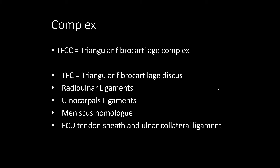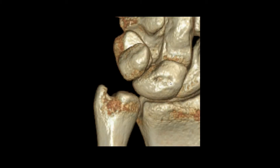The TFCC is the whole complex comprising all the different structures. It includes first of all the TFC — the discus proper — which is the triangular fibrocartilage discus that you can always see on your wrist MRIs. The TFCC also comprises the radio-ulnar ligaments, with a volar and a dorsal one, the ulnar carpal ligament, the meniscus homolog, and also the tendon sheath of the ECU tendon.